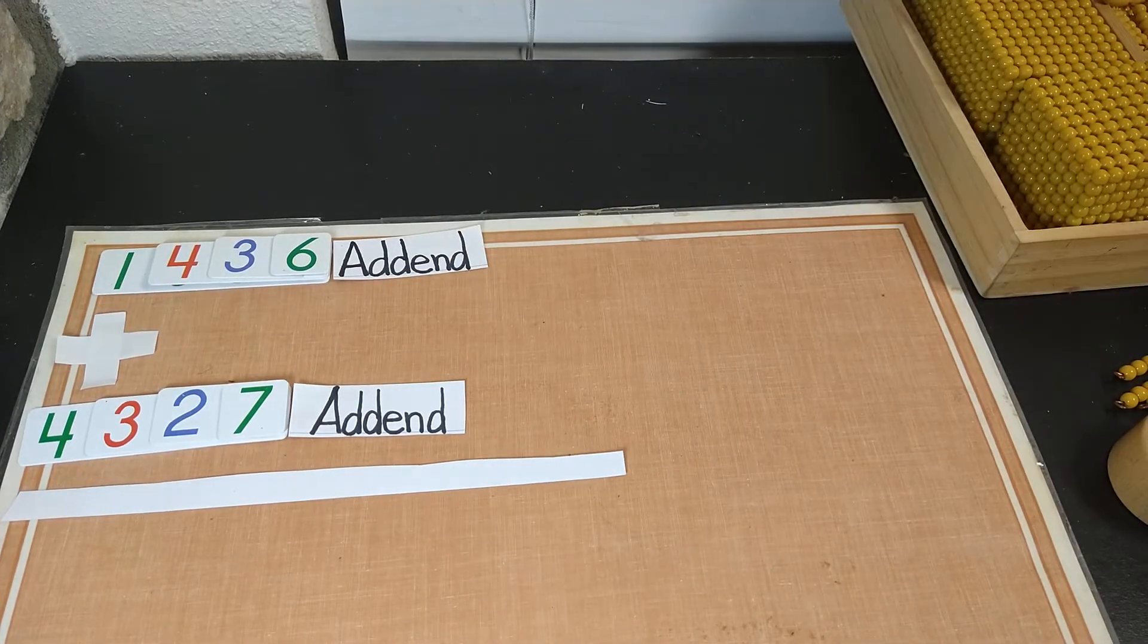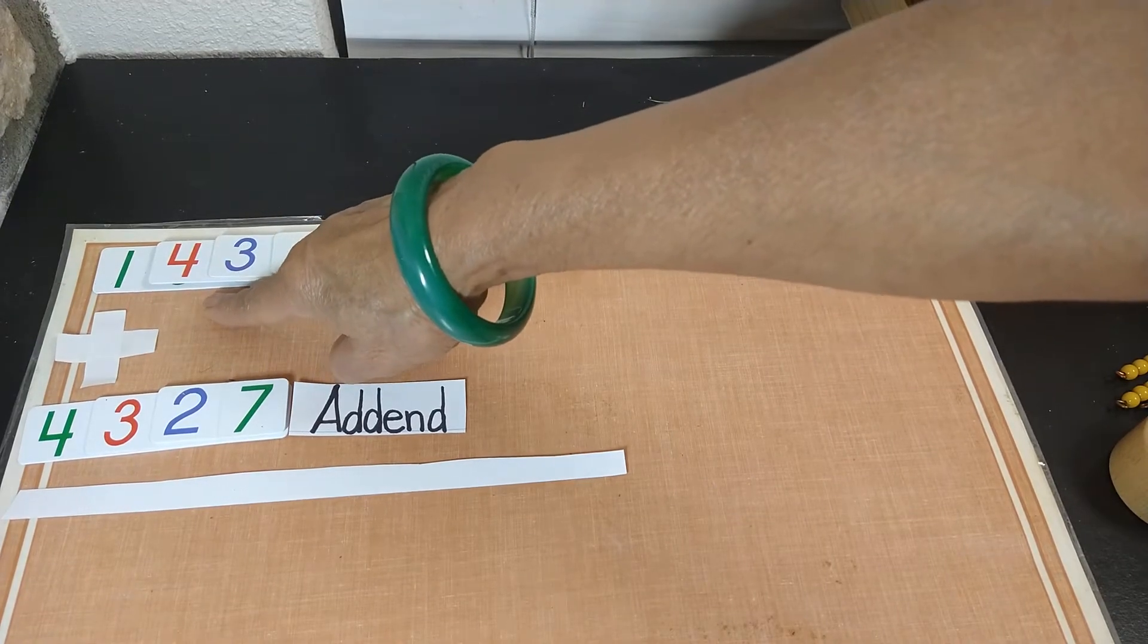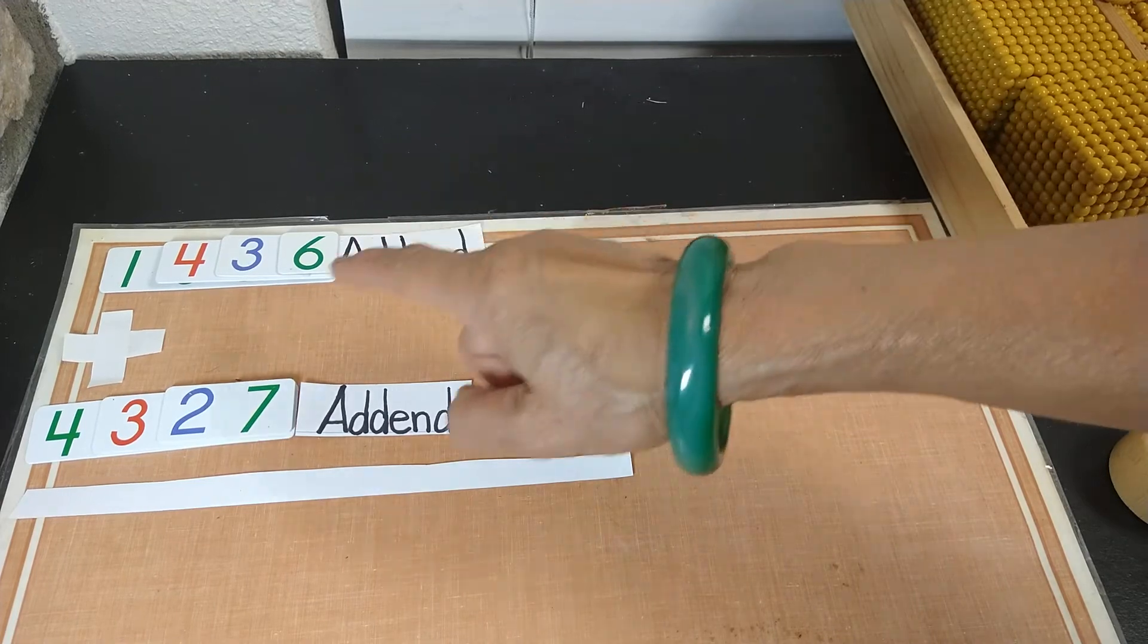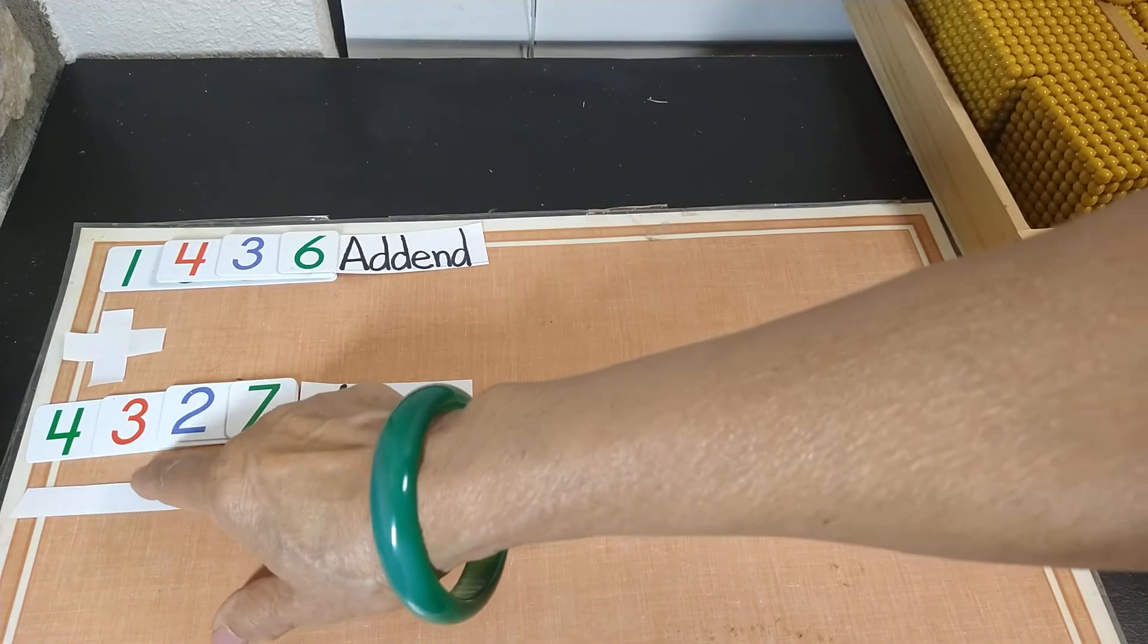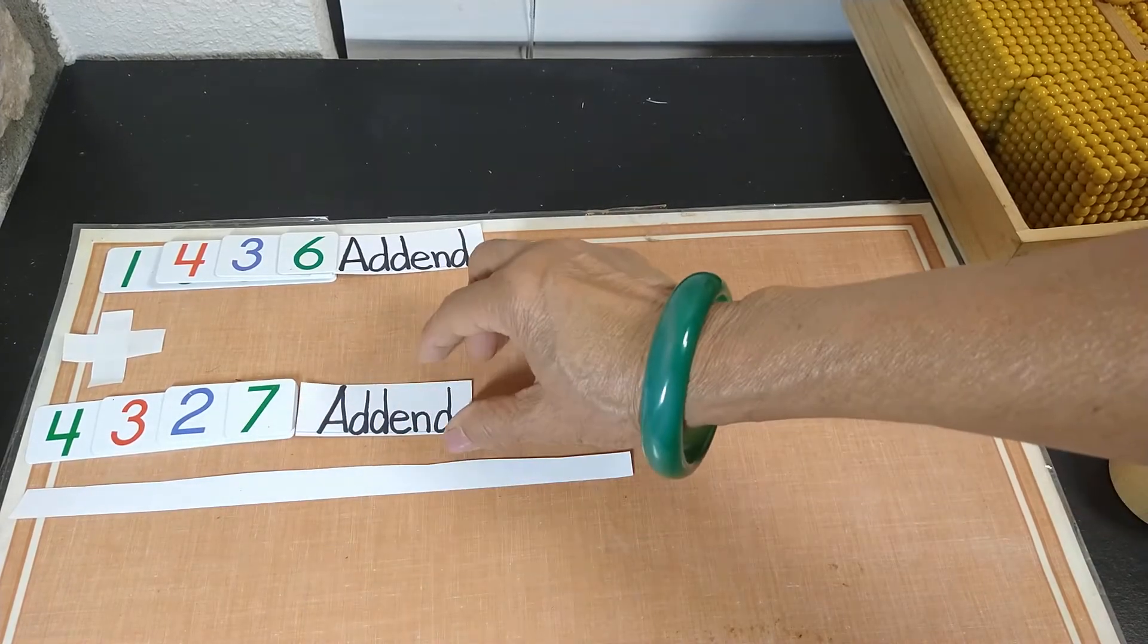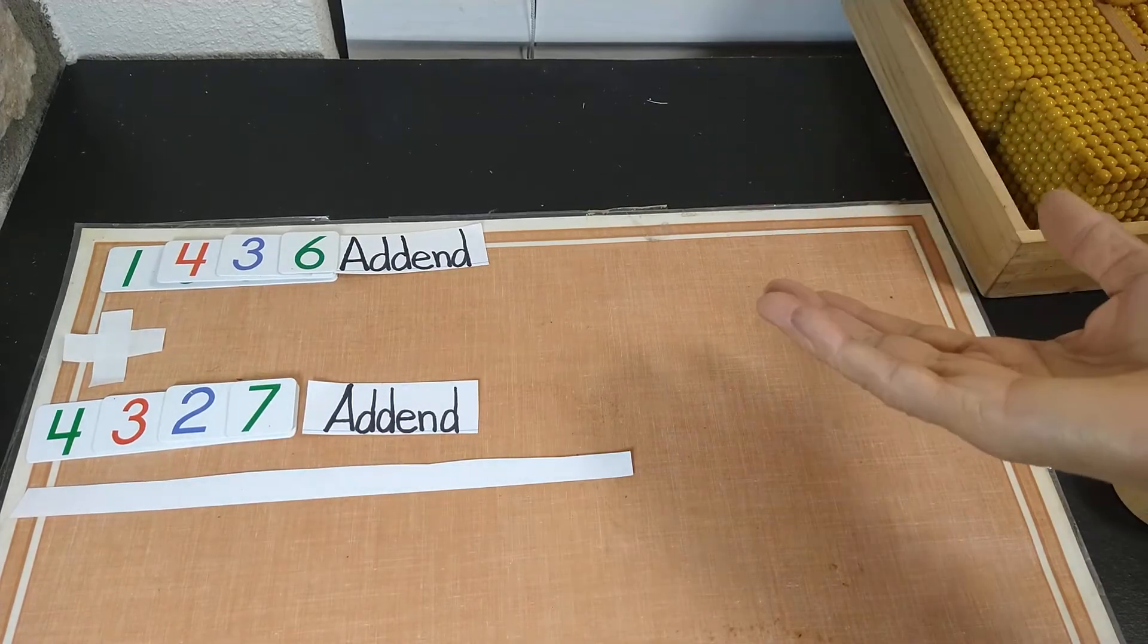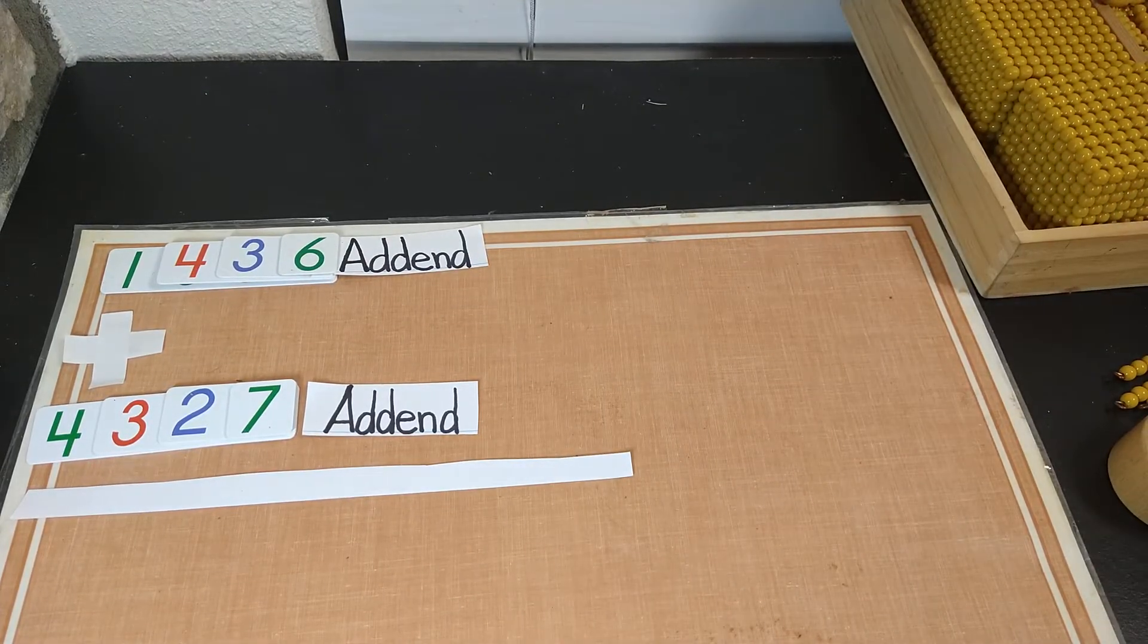I have here math equation. Let's read together. 1,436 that is our first addend. And the second addend is 4,327. And this sign is addition sign telling us put them together and get a big amount. So let's get started.